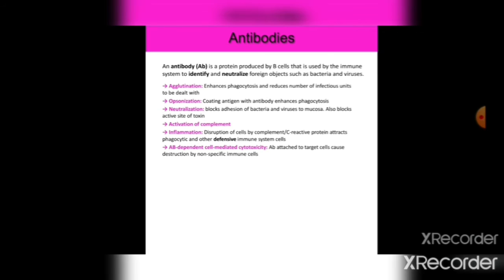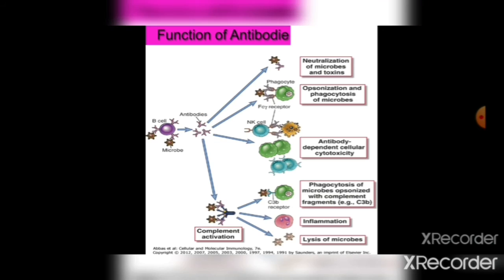Additional antibody functions include: activation of complement and inflammation, which causes disruption of cells by complement; opsonization, which attracts phagocytic and other defensive immune system cells; antibody-dependent cell-mediated cytotoxicity (ADCC), where antibodies attached to target cells cause destruction by non-specific immune cells. In summary, the main functions of antibodies shown in chart form are: neutralization of microbes, opsonization and phagocytosis of microbes, ADCC, phagocytosis of microbes opsonized with complement fragments, inflammation, lysis of microbes, and complement activation.